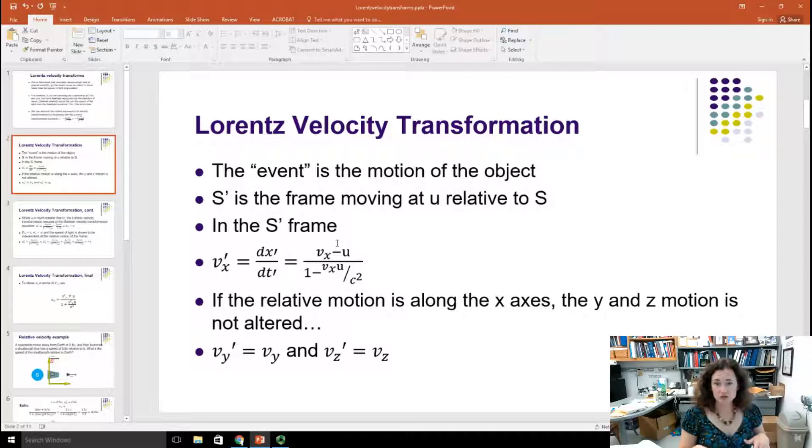If the relative motion is along the X axis, then your Y and your Z motion is not altered. And so then you can say that any motion in the Y direction in the two coordinate systems would give the same speeds, and any motion in the Z direction along the two coordinate systems would give the same speeds. But that's only if the relative motion U is along the X axis.